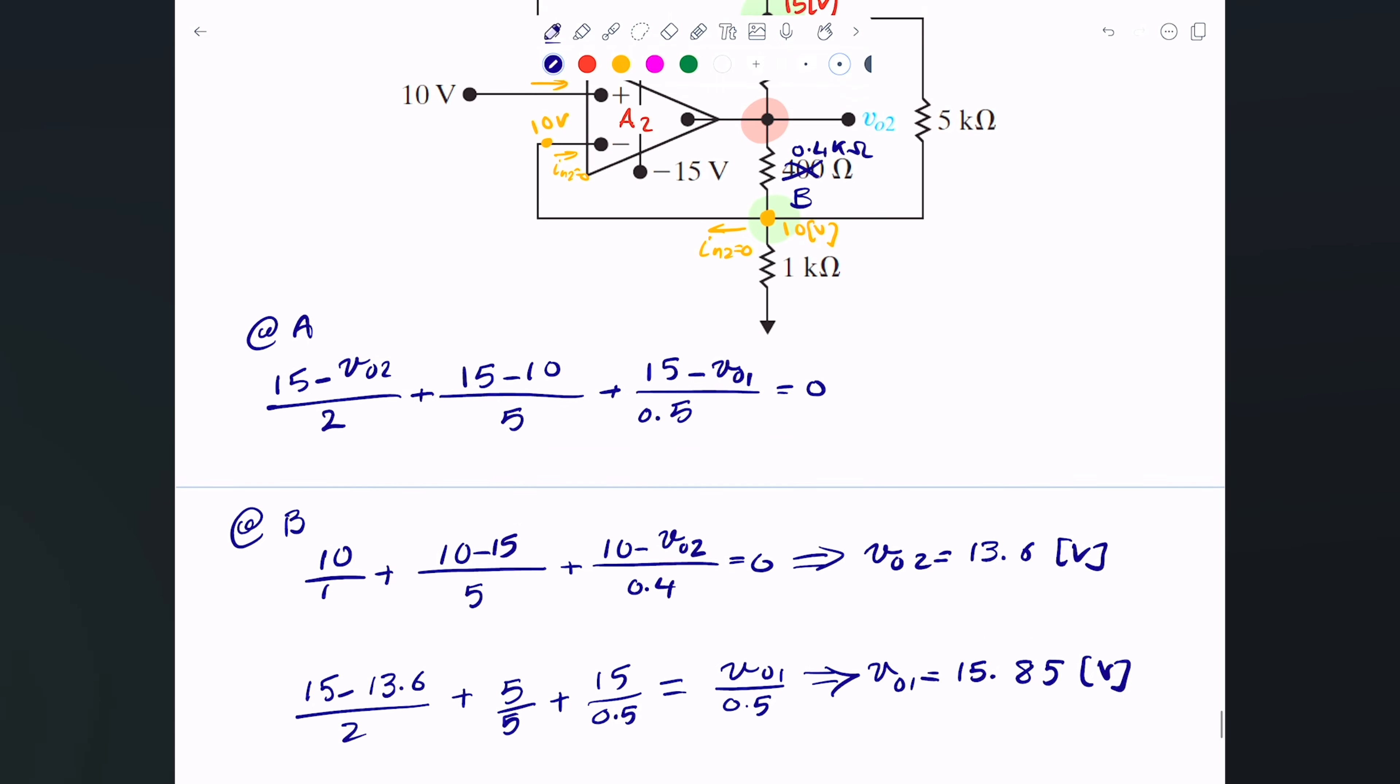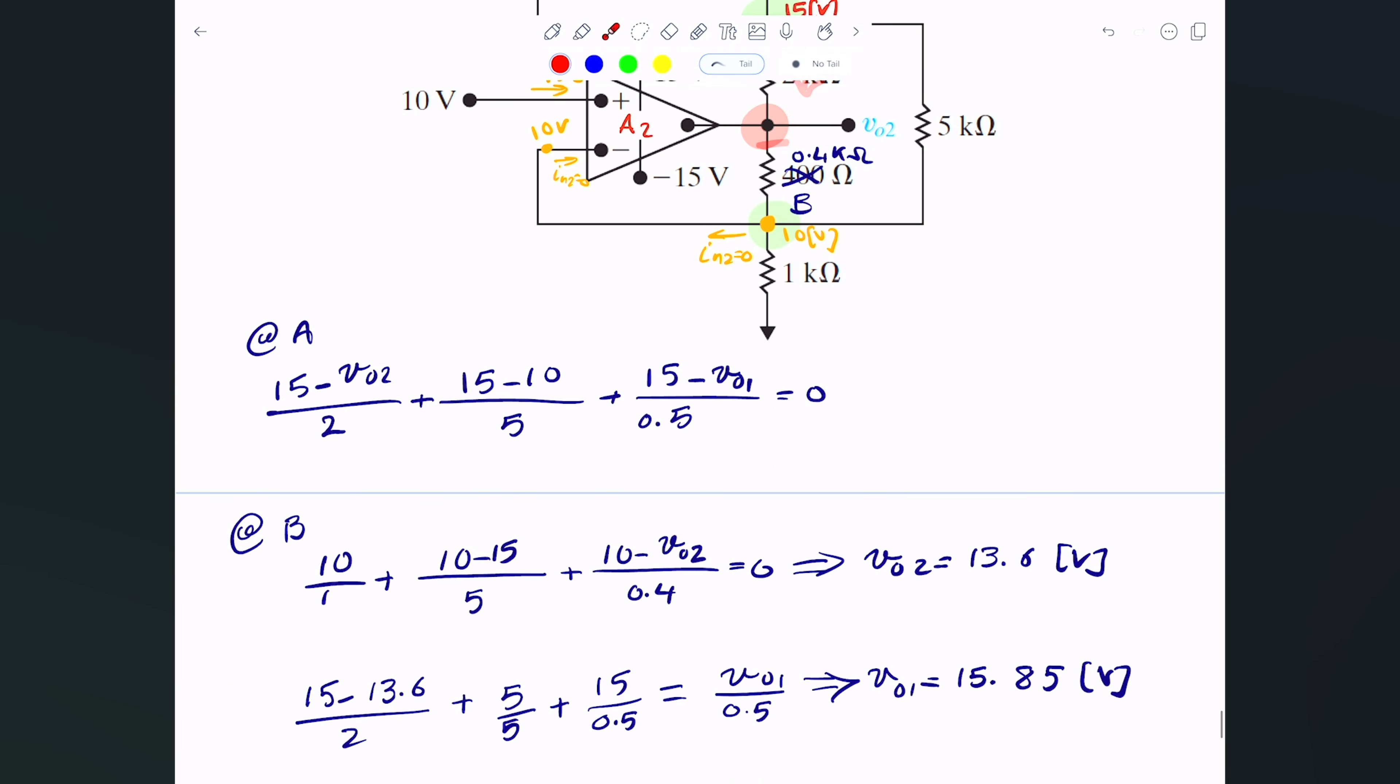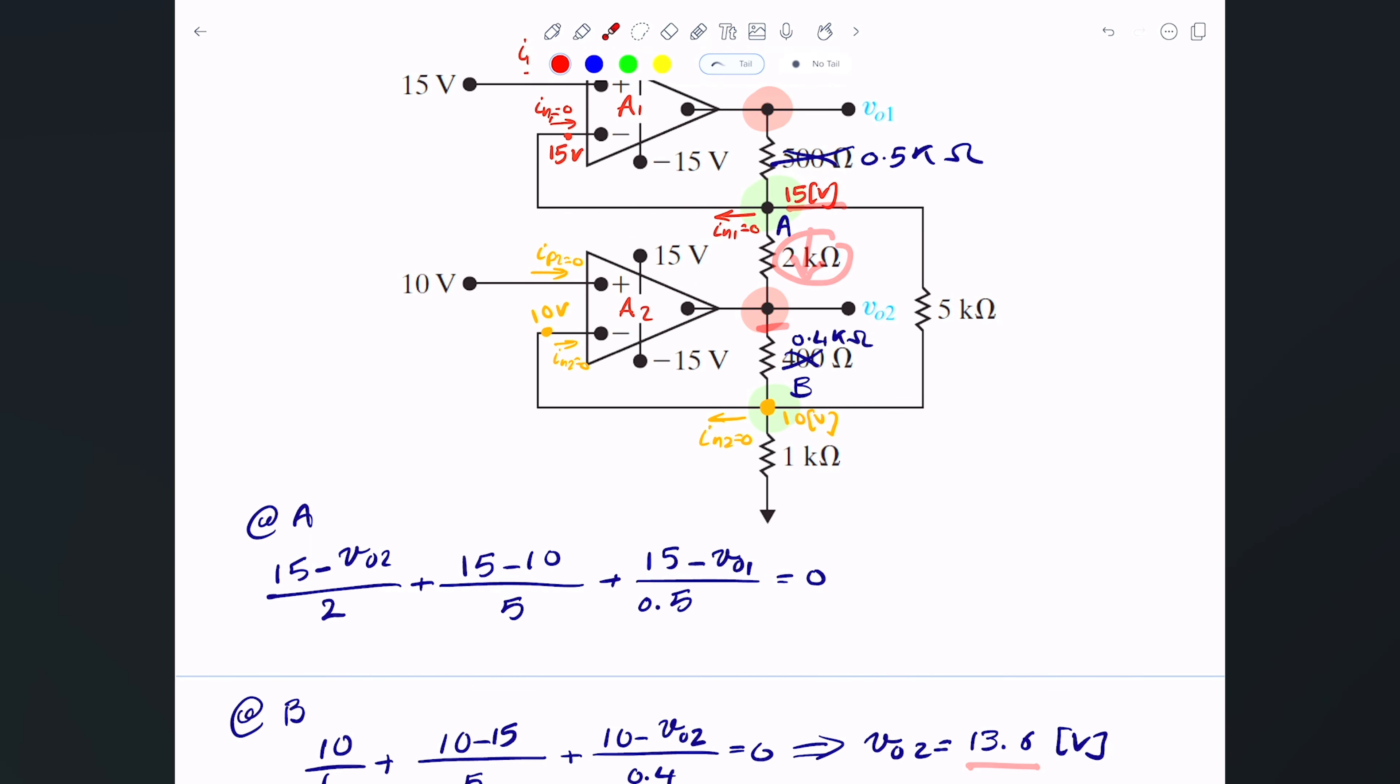So that's it. We have both voltages now and we can compute any currents that we want. For example, if I told you what the current is going through here, you can tell me it's simply 15 minus whatever the voltage V output 2, which happened to be 13.6, divided by the 2 kilo ohms, and that will be that current.